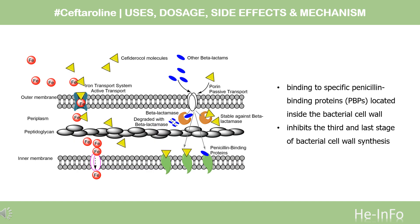Mechanism of Action: Ceftiroline, like the penicillins, is a beta-lactam antibiotic. By binding to specific penicillin-binding proteins (PBPs) located inside the bacterial cell wall, it inhibits the third and last stage of bacterial cell wall synthesis. Cell lysis is mediated by bacterial cell wall autolytic enzymes such as autolysins. It is possible that ceftiroline interferes with an autolycin inhibitor.